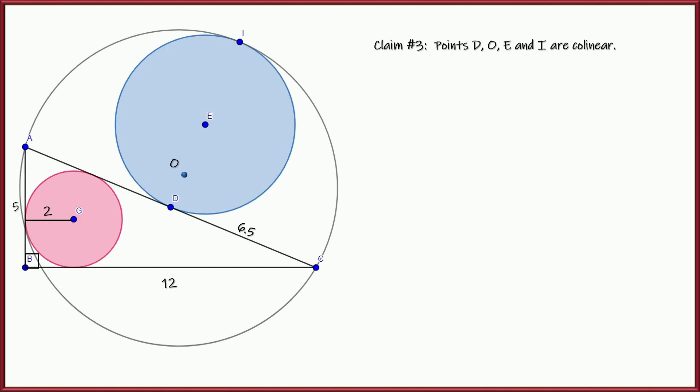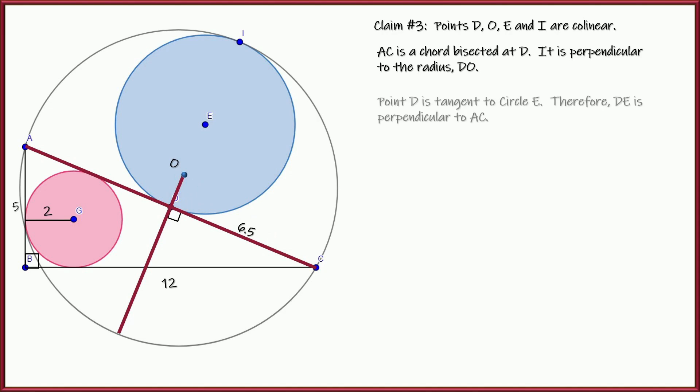Easy mistake to make. So let's see here. AC is a chord. Might be the radius, but it's definitely a chord for the large circle. And it's bisected at point D. That means that there is a radius that is perpendicular to that chord, and it passes through point D. So next thing. Point D is also tangent to circle E. Therefore, DE is perpendicular to AC, and it's perpendicular at point D, just like OD. So D, O, and E are absolutely 100% collinear.